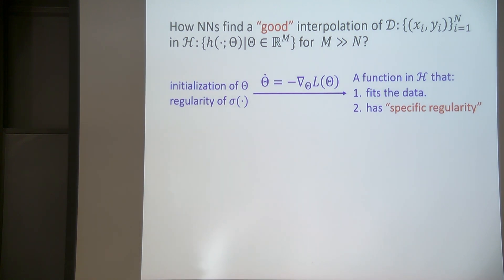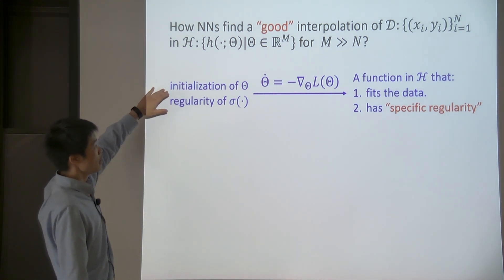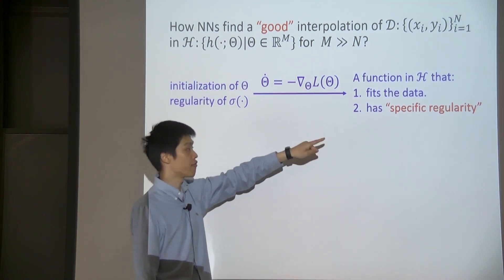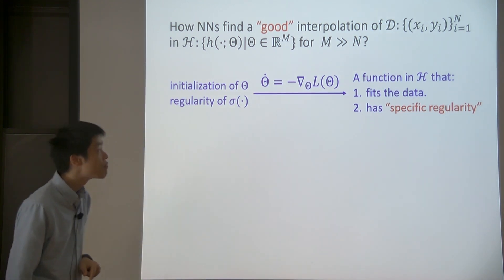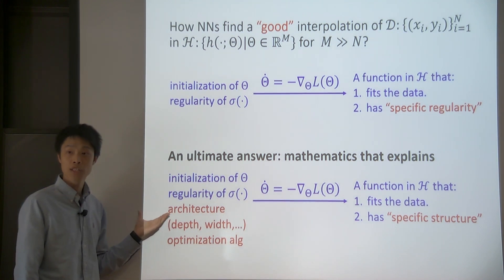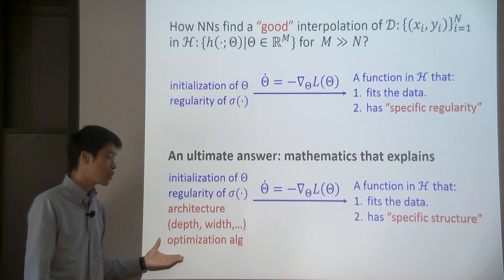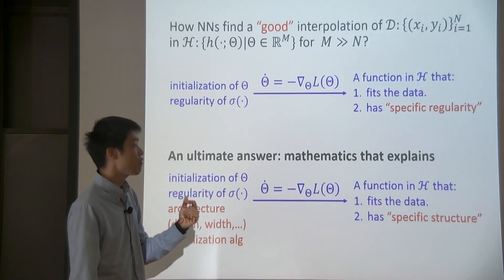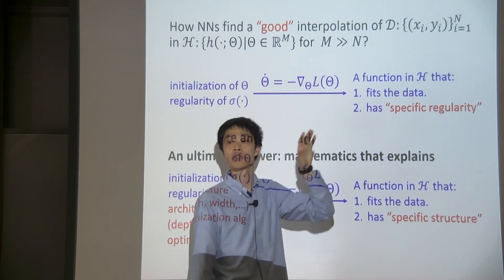Okay. So, now, let's, based on all these results, look at the initial problem of how neural networks find a good interpolation of this data in this huge function space. Essentially, we can see that this initialization of the theta and also this regularity of the activation function through this dynamics is converted to some requirement of specific regularity. And for me, what is the ultimate answer to the deep neural network? It should be some mathematics that explains, for example, architectures. Actually, it's a very difficult problem. And optimization algorithms, how all of these, through this dynamics, is converted to something with specific structure. And definitely, we know that this specific structure should contain some of this specific regularity. But we know that probably more than that.